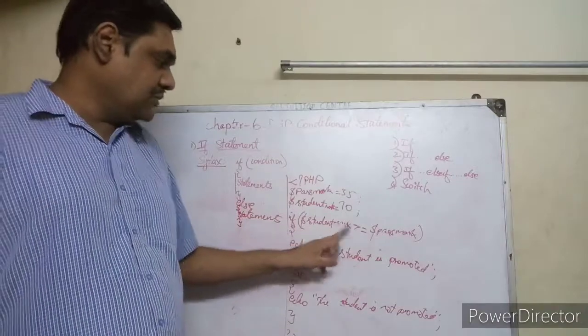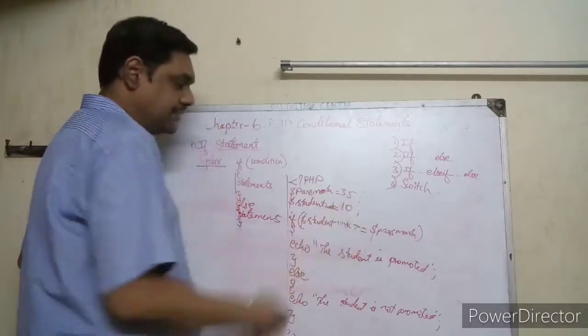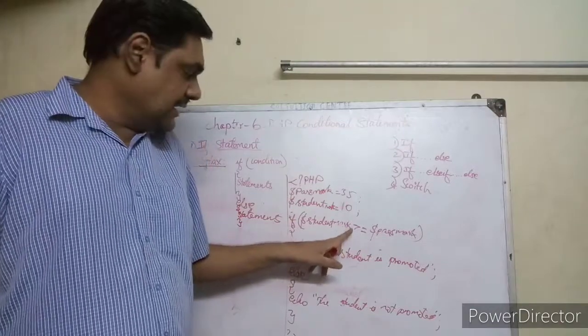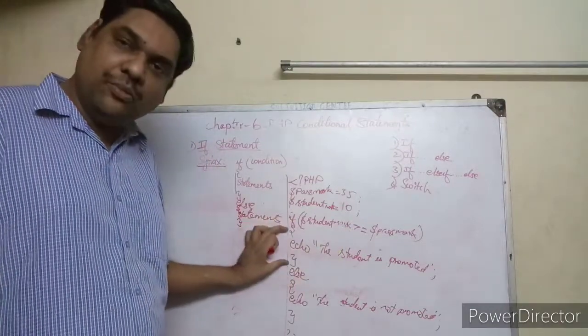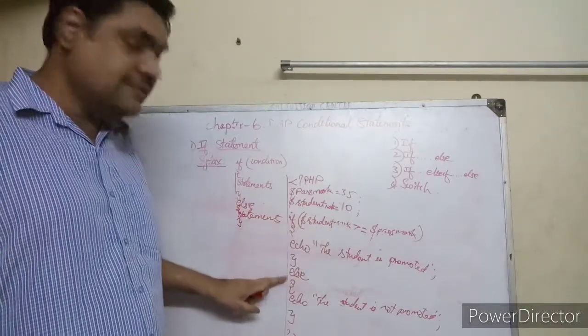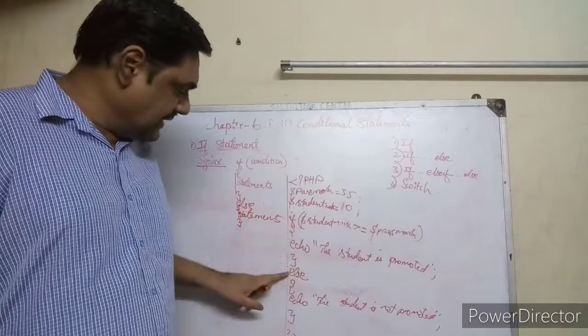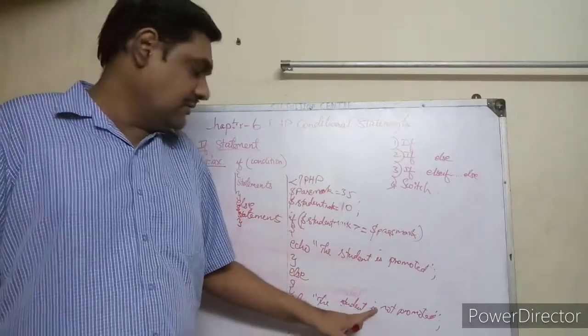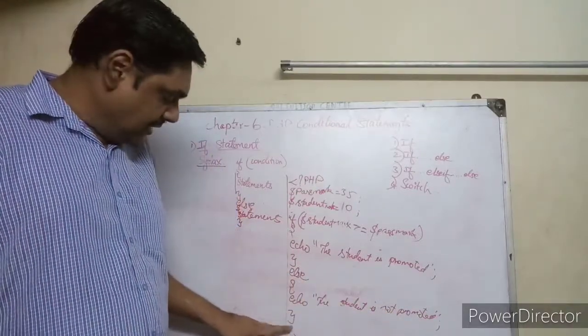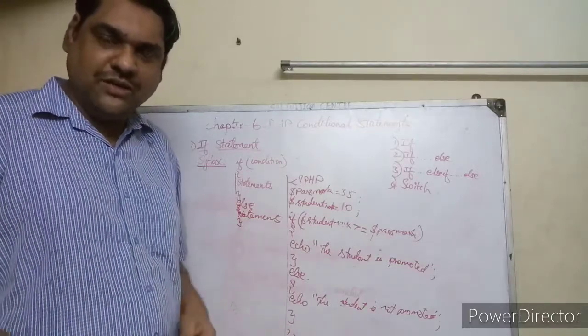If the student mark was 10 instead, the condition would be false. When false, it will not enter the if part - it will directly go to the else part and print 'The student is not promoted'. After the close curly braces, if there are more statements it will execute those, otherwise it stops.